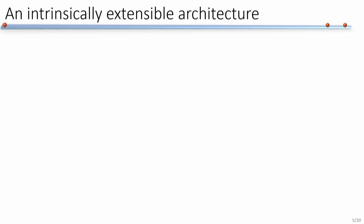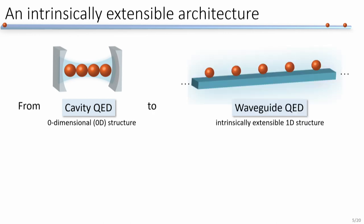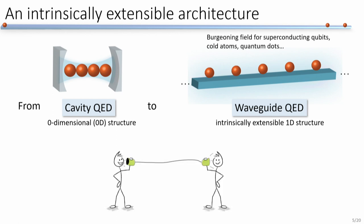One solution is to use non-local degrees of freedom to mediate interactions. For example, we can put qubits into a cavity, but a cavity is a zero-dimensional structure. If we want to keep scalability in mind, we want a structure that is intrinsically extensible — for example, a waveguide. When we couple multiple qubits onto the same waveguide, we can use photons in the waveguide to mediate interactions between qubits separated by longer distances.